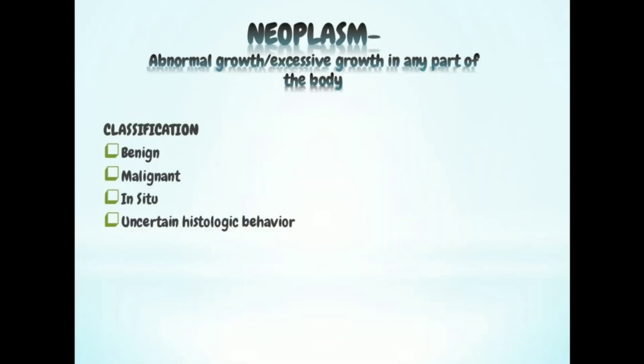The first classification is benign. Benign means there will be a certain neoplasm but it may or may not be infectious, and it won't damage you or give you any trouble. The second one is malignant, which is the most important — we can also call it cancer. The third classification is in situ, and the fourth one is uncertain histologic behavior.